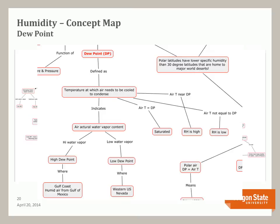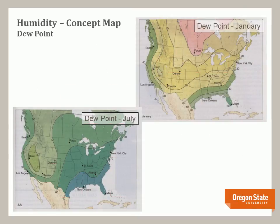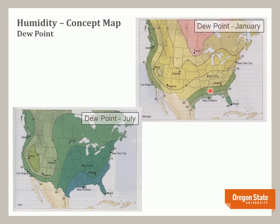We can also look at the dew point from the point of view of actual water vapor content. High water vapor and high dew points are common along the Gulf Coast due to humid air from the Gulf of Mexico, which extends into the mid-continent and up the east coast during July — that is why there is humid weather during those months. In January, dew points are still fairly high along the Gulf Coast, but cool air from the north gives the mid-continent a lower dew point.